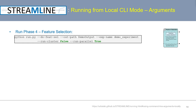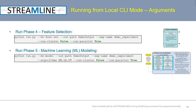To run the fourth phase — feature selection — use the doFeatSel flag, then specify the same four key parameters. To run the fifth phase — machine learning modeling — use the doModel flag, and again specify the same four key parameters: outputPath, experimentName, runCluster, and runParallel.